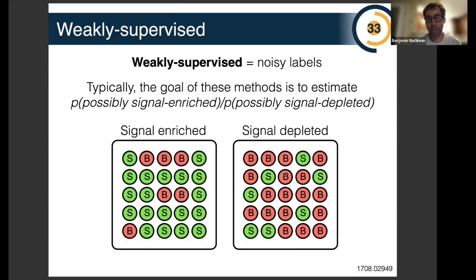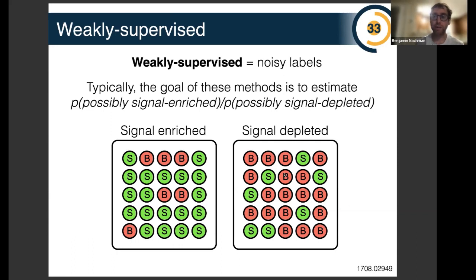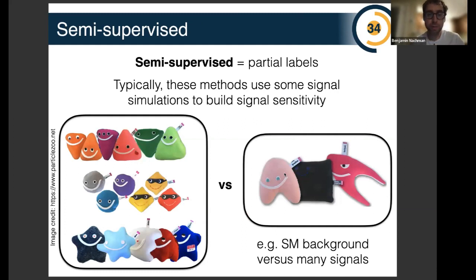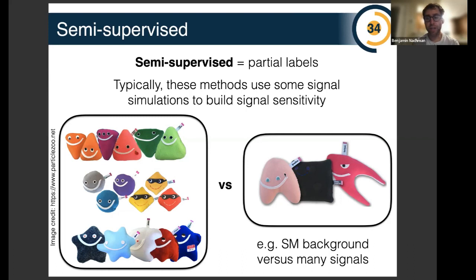Then there's weakly supervised learning, where you have labels for every example but they're noisy. Typically you have two datasets, each being mixed samples of your two classes: one signal-enriched, one signal-depleted, both with some signal and some background. You assign a noisy label of signal to the signal-enriched sample and background to the signal-depleted sample, and proceed with machine learning. There are provably optimal learning strategies in this noisy context. Lastly, semi-supervised learning uses some partial labels — typically some signal simulations plus control region data that's probably mostly background — and you might train a classifier to distinguish some concoction of signal models against that control region data to attain model-agnostic sensitivity.